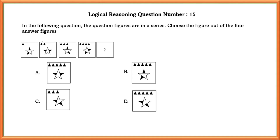Logical reasoning question number fifteen: the question figures are in a series — choose the correct figure from the four answer options. Here, the small shaded triangles at the top are increased by 1 each time. In the star diagram, the shaded part is rotated by 1 position in the clockwise direction. So according to this rule, option D is the correct option.